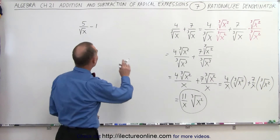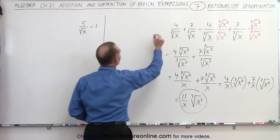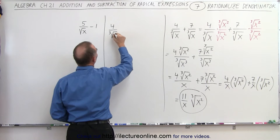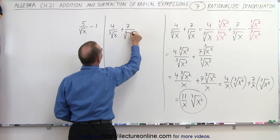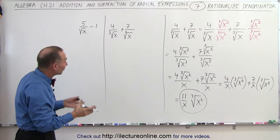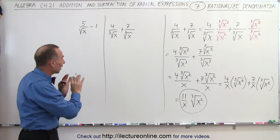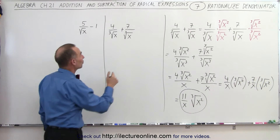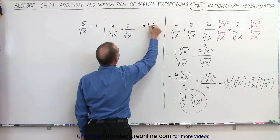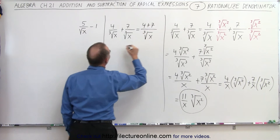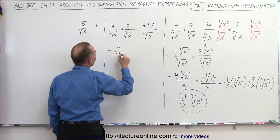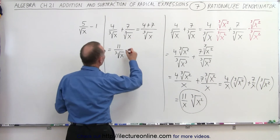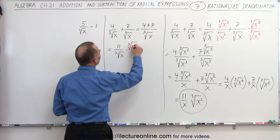What you could also do is the following. We're going to rewrite this problem: we have 4 over the cube root of x plus 7 over the cube root of x. Since the denominators are the same, you can add the numerators — that rule still holds true even though the denominator looks as unusual as the cube root of x. This becomes 4 plus 7 over the cube root of x, which equals 11 over the cube root of x. Then, since you don't want to leave a radical in the denominator, you rationalize by multiplying both the numerator and denominator by the cube root of x squared.